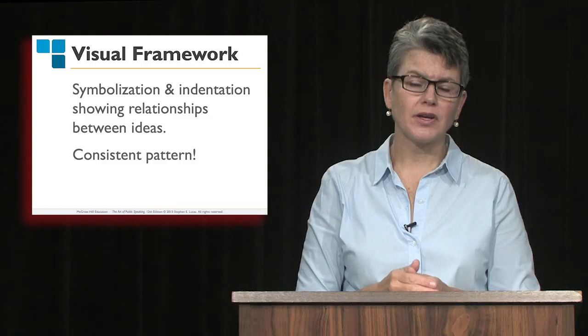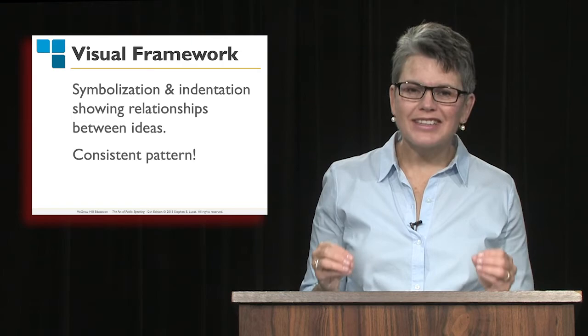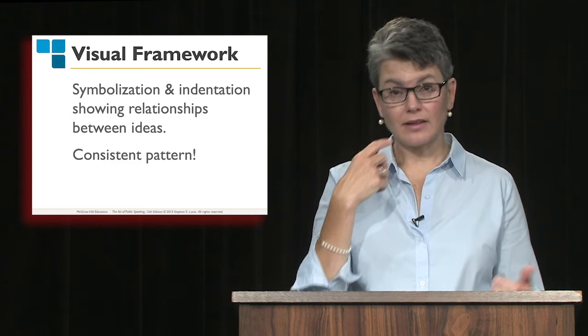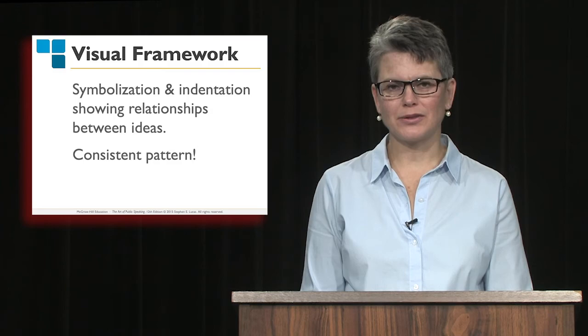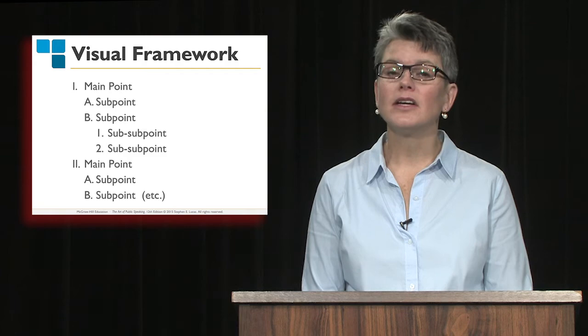The next part is indenting. Indenting the points that are subordinate to one another is also very, very important so that we can visually glance down at our notes and back up and know in our head where we are. Indenting is critically important to helping us follow along with our own speech and not get all jumbled up. Making this pattern consistent is really, really critical. So ultimately your visual framework might show your main point starting with a Roman numeral, then subpoints, then sub-subpoints — the symbolization and indentation work together to make the speech very easy to follow.